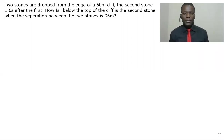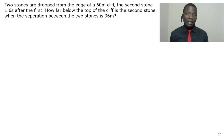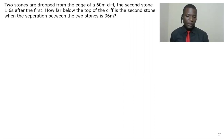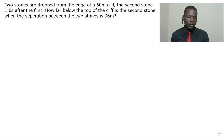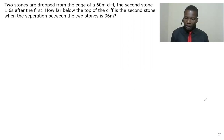Hello and welcome to Pye Excellence Tutorials. In this video we are going to solve a kinematics question. It reads: two stones are dropped from the edge of a 60-meter cliff. The second stone is dropped 1.6 seconds after the first. How far below the top of the cliff is the second stone when the separation between the two stones is 36 meters?